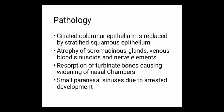In pathology, ciliated columnar epithelium is replaced by stratified squamous epithelium. There is atrophy of seromucinous glands, venous blood sinusoids, and nerve elements. Resorption of turbinate bone causes widening of nasal chambers, and paranasal sinuses are small due to arrested development.